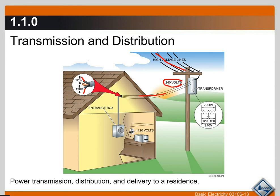The plug-in outlets you have for your TVs, toasters, and smaller appliances are 120 volts. If you have an electric water heater and air conditioning condensing units with compressors, those use 240 volts.